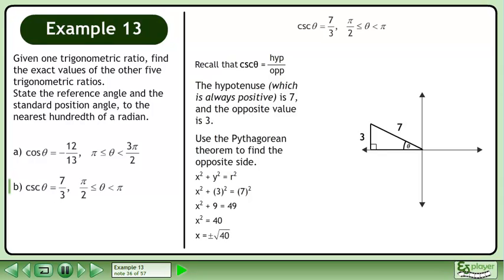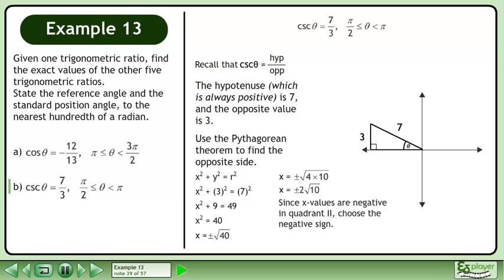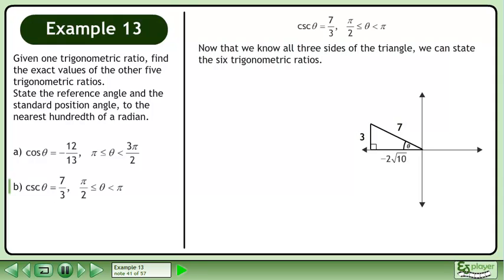Square root both sides to get x equals plus or minus root 40. Root 40 can be simplified to a mixed radical — 40 is the same as 4 times 10. The square root of 4 is 2, and root 10 can't be simplified further. Since x values are negative in quadrant 2, choose the negative sign. The value of x is negative 2 times root 10. Now that we know all three sides of the triangle, we can state the six trigonometric ratios.